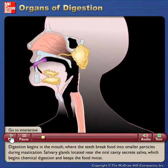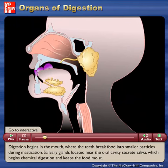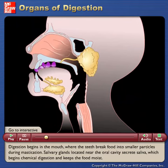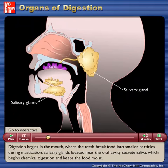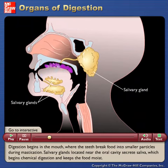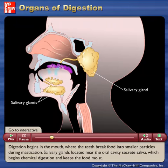Digestion begins in the mouth, where the teeth break food into smaller particles during mastication. Salivary glands, located near the oral cavity, secrete saliva, which begins chemical digestion and keeps the food moist.